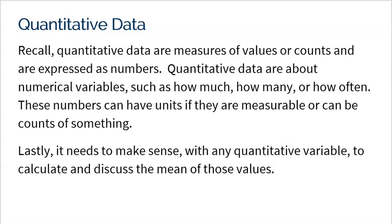Let's first talk about what quantitative data is. Quantitative data are measures of values or counts, and are expressed as numbers — we're thinking values, measurements, or counts expressed as numbers. Quantitative data are about numerical variables, such as how much, how many, or how often. These numbers can have units if they're measurable, or it can be counts of something. For example, if you're measuring the weights of lions, that's going to be in pounds or kilograms. Or it could be counts, like how many lions are in a particular square mile.